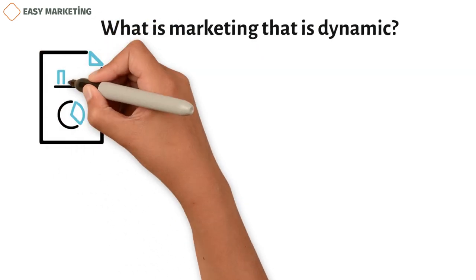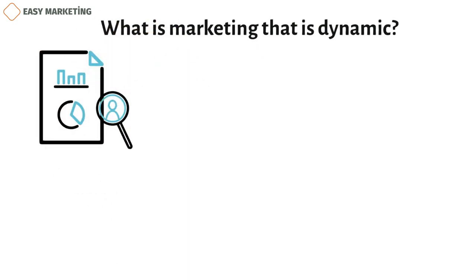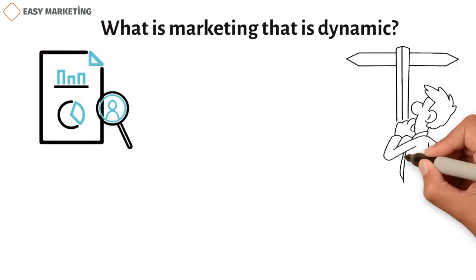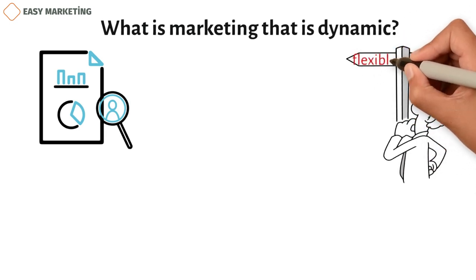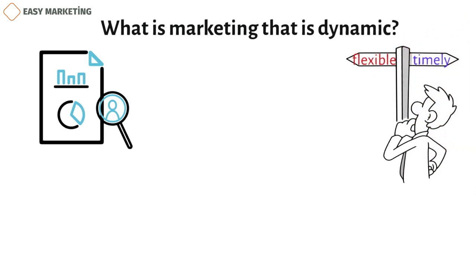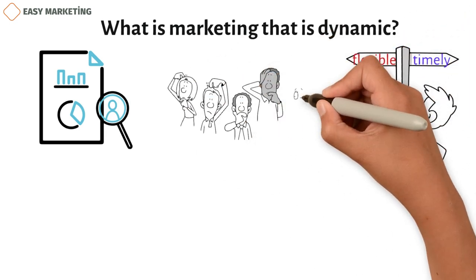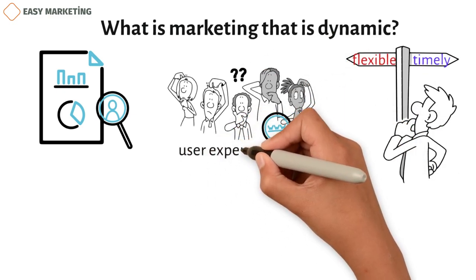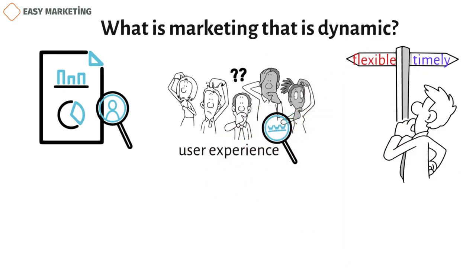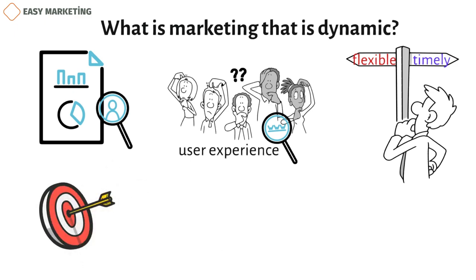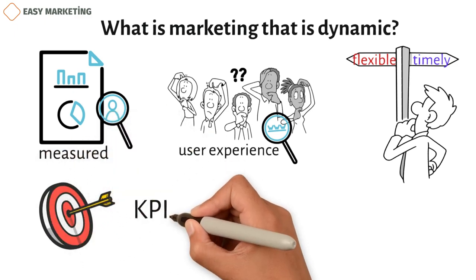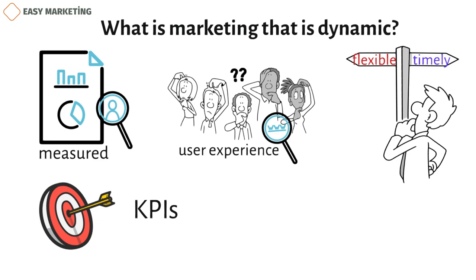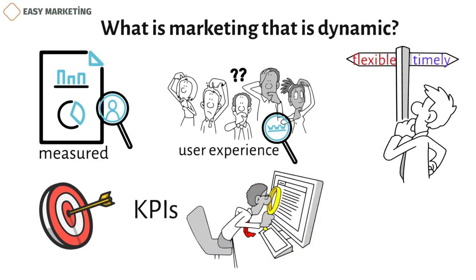Dynamic marketing is the process of using customer data to make marketing decisions that are flexible and timely. By adapting to changing consumer preferences, which often happen on the internet, it often puts the user experience first. Part of this idea is setting goals, using data that can be measured, like key performance indicators (KPIs), and keeping track of progress to make changes as needed.